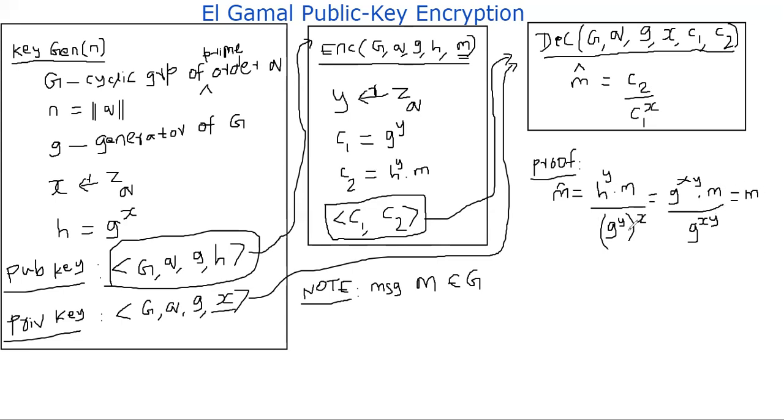This is not a regular division. This is the division in the group. It could be modular inversion, something like that. And you see here, the M was recovered by the decryptor.